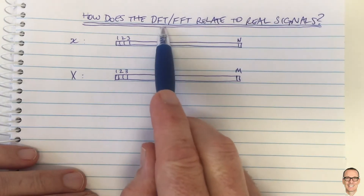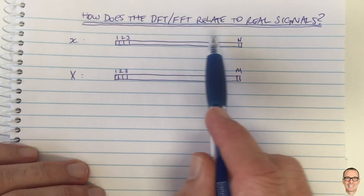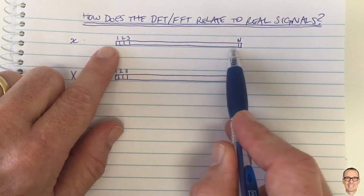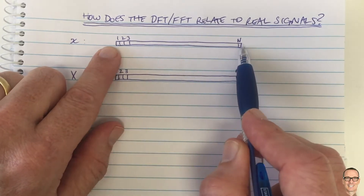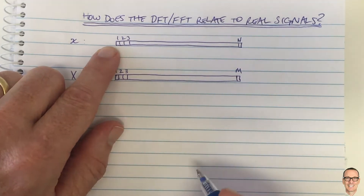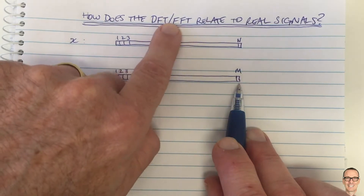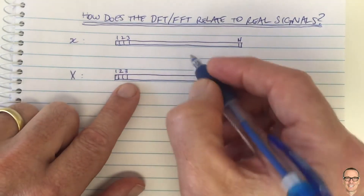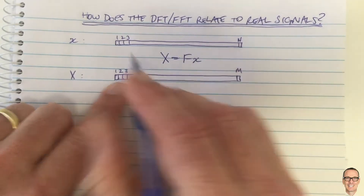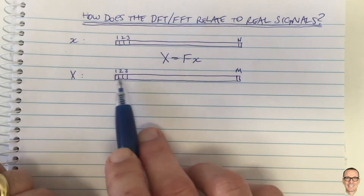Let's take a look at the discrete Fourier transform, often implemented as a fast Fourier transform, and ask how it relates to real signals. If you have a vector of samples of length N, in programs like MATLAB you can put that into the FFT function and it gives you a vector which is the DFT. What it does is multiply your vector x by the Fourier transform matrix, giving you a new vector, capital X.